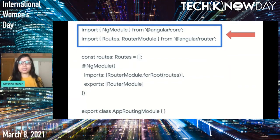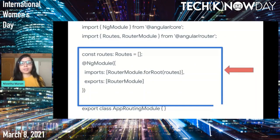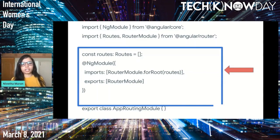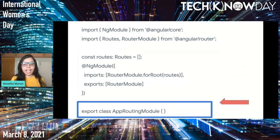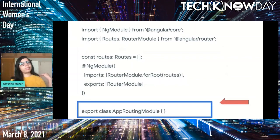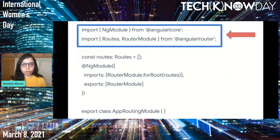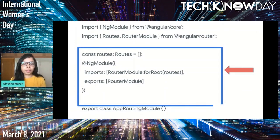RouterModule provides static methods like RouterModule.forRoot(), passing a configuration object to the router. Next, we define a constant route array of type Routes, which holds the information for each route. In the imports attribute we call the static RouterModule containing the routes array as a parameter. Finally, in the exports array we export the routing module we created. This is how we set up the routing module: importing, defining the routes array, and exporting the AppRoutingModule.